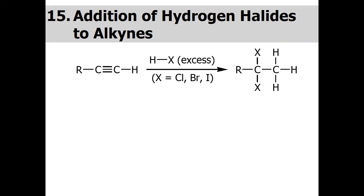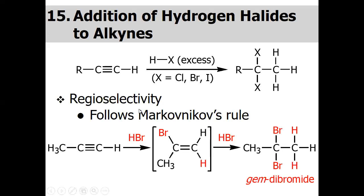Addition of hydrogen halide to alkynes also follows Markovnikov's rule — the rich get richer, meaning the carbon having more hydrogens receives the hydrogen (electrophile) while the halide adds to the other carbon. In this case with a terminal alkyne, H adds to the terminal CH carbon while X adds to the internal carbon with no hydrogen. Both pi bonds cleave to give a geminal dihalide compound.